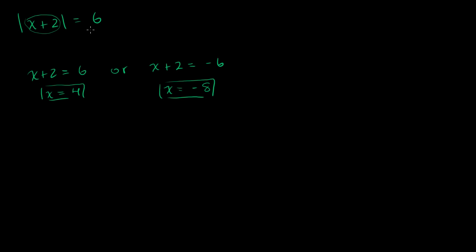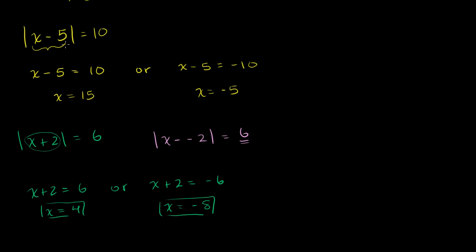To help it gel in your mind that absolute value can be viewed as a distance, you could rewrite this problem as the absolute value of x minus negative 2 is equal to 6. This is asking: what are the x's that are exactly 6 away from negative 2? Just like the first problem asked what x's are exactly 10 away from positive 5 — those were 15 and negative 5. Here the answers are 4 or negative 8.